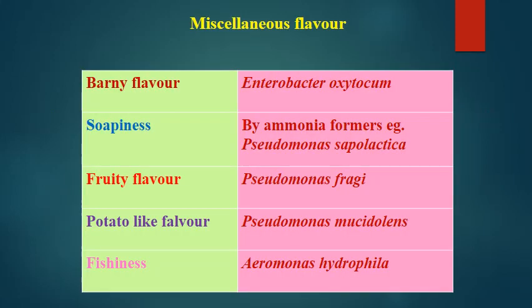Other miscellaneous flavor changes include: barny flavor due to Enterobacter oxytocum; soapiness flavor due to ammonia-forming organisms like Pseudomonas sapolactia; fruity flavor due to Pseudomonas fragi; potato-like flavor caused by Pseudomonas mucidolens; and fishy odor due to Aeromonas hydrophila. These are some uncommon but specific flavor changes in milk.